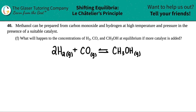Number 40. Methanol can be prepared from carbon monoxide and hydrogen at high temperature and pressure in the presence of a suitable catalyst. This is the last part of the question, letter F: What will happen to the concentrations of H₂, CO, and CH₃OH at equilibrium if more catalyst is added?